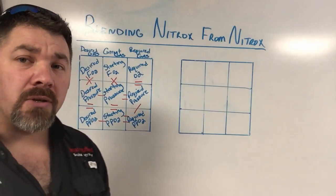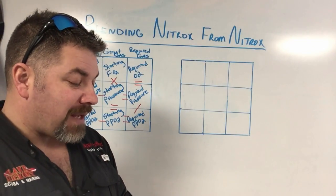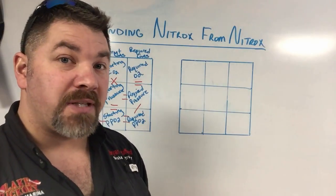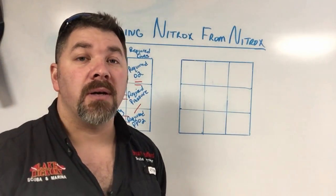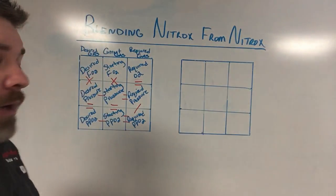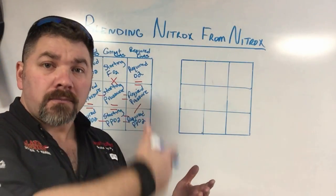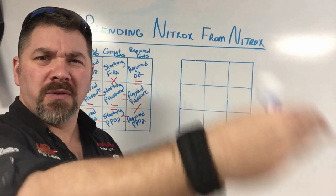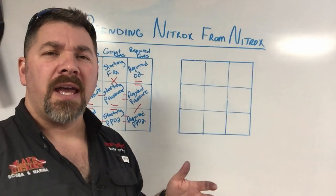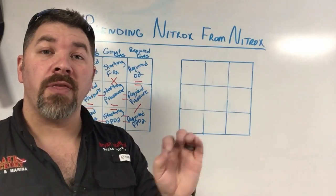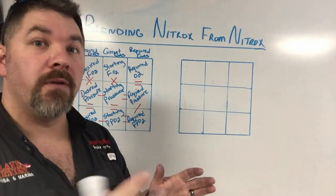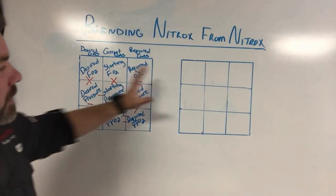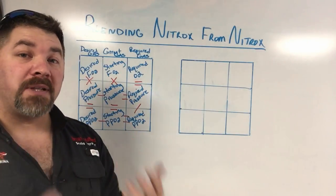One note on the calculator: if we get a number that can be rounded up, we will round up to keep it simple. We're only going to use one or two decimal places. So if I have 40%, I write 0.4; if I get 0.139, I round that up to 0.14. Now let's start filling in the block with a particular blend we currently have and see how we can adjust it to the blend we want.